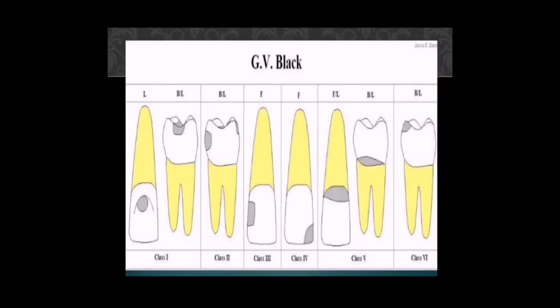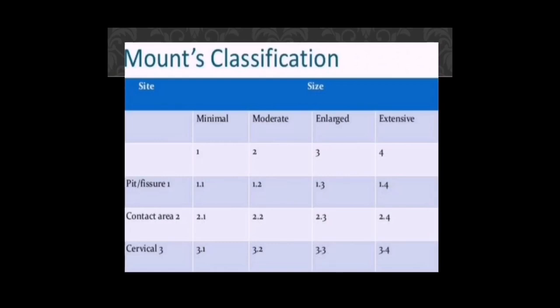According to GV Black classification, dental caries is classified into six classes. Class 1: involvement of pits and fissures of anterior and posterior teeth. Class 2: interproximal surface of posterior teeth only. Class 3: interproximal surface of anterior teeth without involvement of the incisal edges. Class 4: involves the incisal edges. Class 5: the cervical part of both anterior and posterior teeth. Class 6: cuspal involvement only.